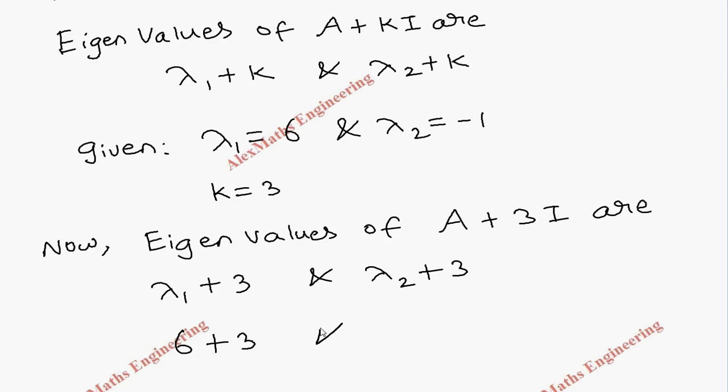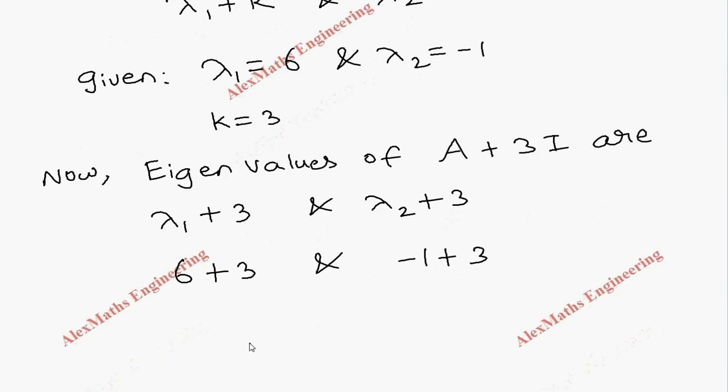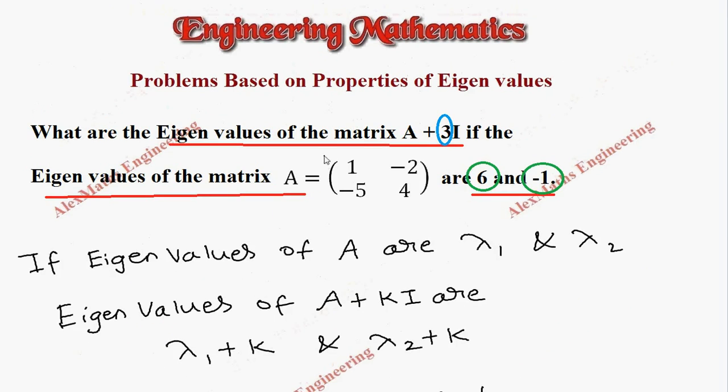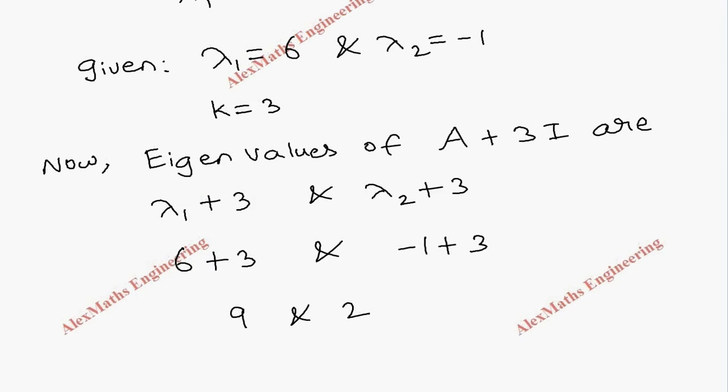So we are getting 9 and 2. These are the eigenvalues of the matrix A + 3I: 9 and 2.